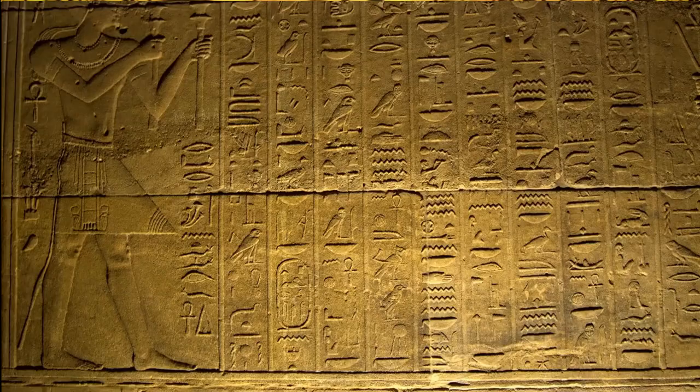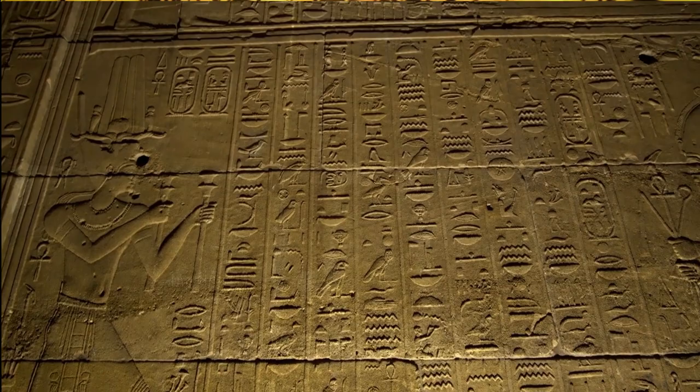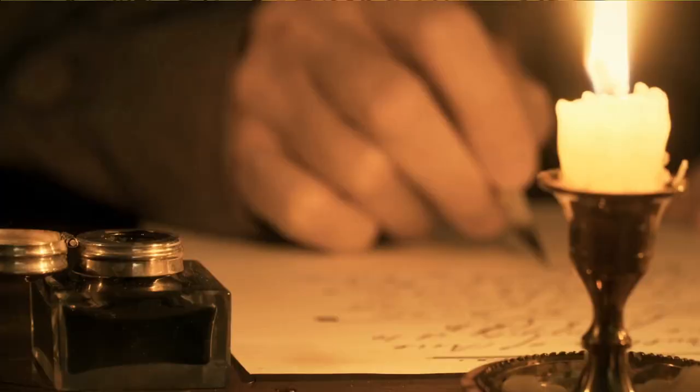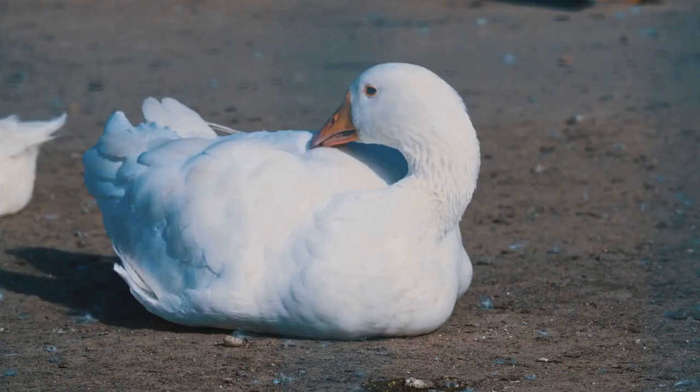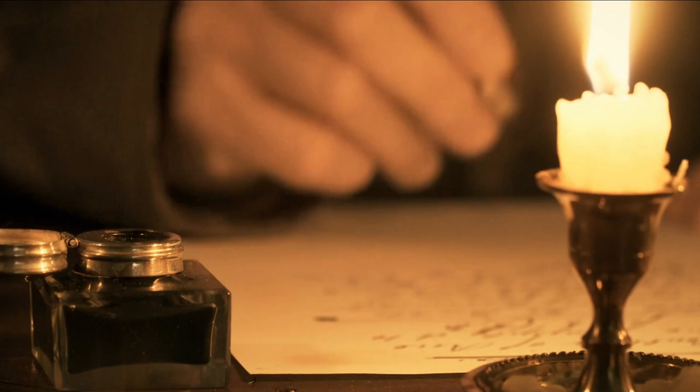The quill, on the other hand, was a popular writing tool in Europe during the Middle Ages. Quills were made from the feathers of large birds such as geese, and they were sharpened to a point. The ink was stored in a small container, and the quill was dipped into the ink before writing.